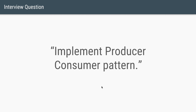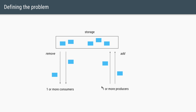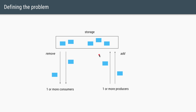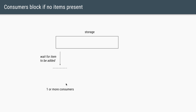The question is to implement a producer-consumer pattern. In this pattern, one or more producers produce some kind of items or objects, which are placed in a storage area. One or more consumers will get the items out of the storage and process them.